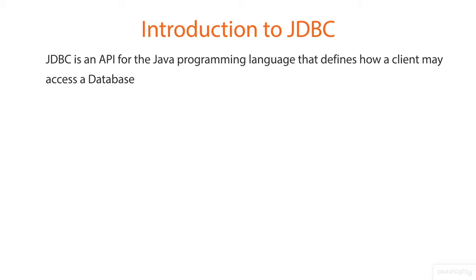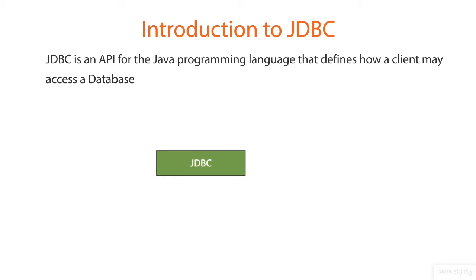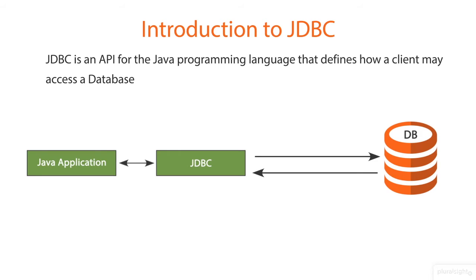JDBC is a Java Database Connectivity technology which is a part of Java Standard Edition platform from Oracle Corporation. This technology is an API for the Java programming language that defines how a client may access a database. It provides methods for querying and updating data in a database.